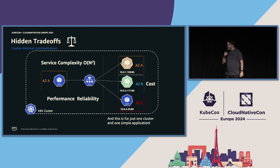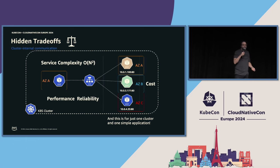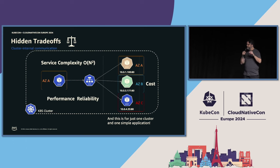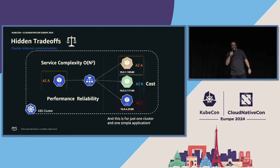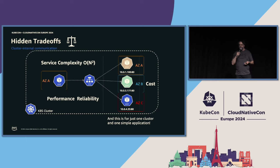Maybe I wanted all that traffic to only go to AZ-B. And there are performance and reliability considerations — maybe I wanted traffic to only go to the same AZ because data on that backend service performs better in AZ-A. These are all hidden trade-offs that I need visibility into to make better resiliency decisions.